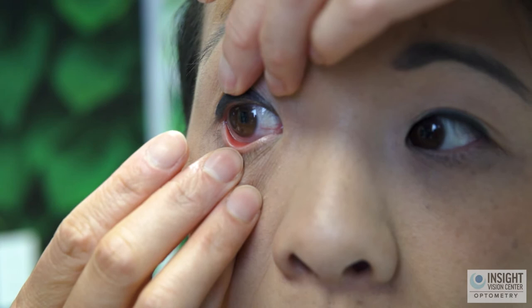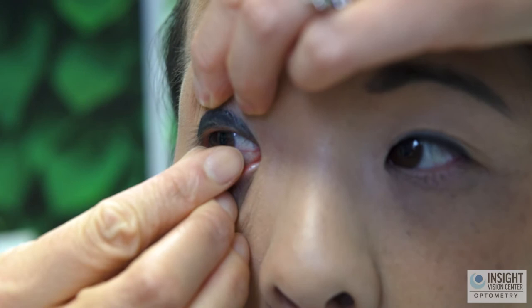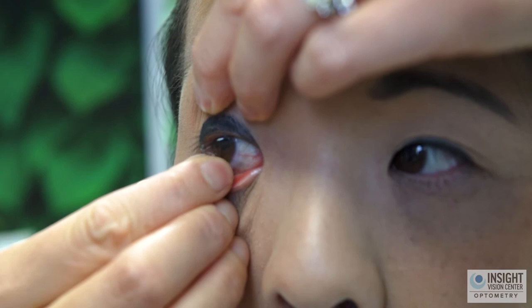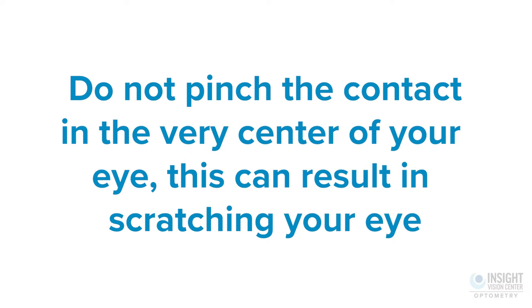Steps to removing your contacts. Step 1: Use your non-dominant hand to hold your upper eyelid open. Step 2: Use your dominant pointer finger to sweep the contact lens off to the outer side of your eye. Step 3: Gently pinch the contact lens off to safely remove using the pad of your finger, not your fingernails.